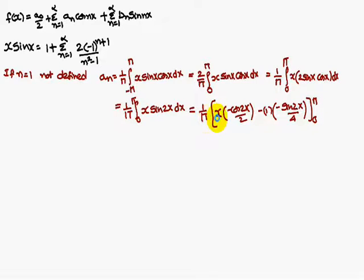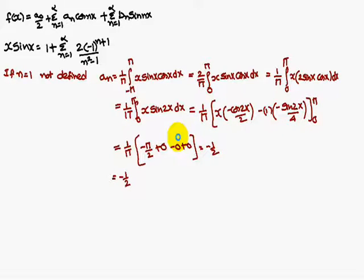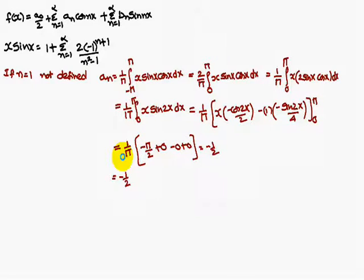Integrating by parts: 1 by pi times [x times (minus cos(2x)/2) minus 1 times (minus sin(2x)/4)], evaluated between 0 and pi. Substituting pi: cos(2π) = 1, so we get minus pi/2. sin(2π) = 0. Substituting 0: everything is 0. So we are left with 1 by pi times (minus pi/2). Pi cancels, giving a1 = minus 1/2.